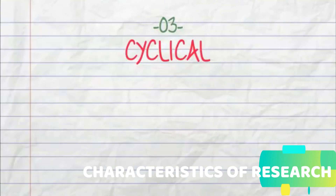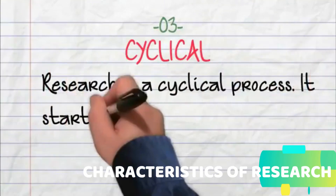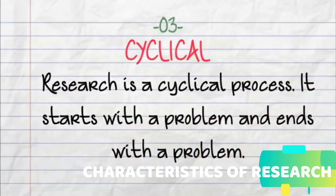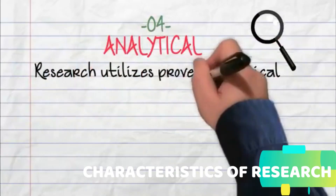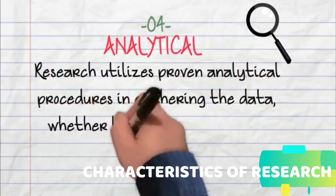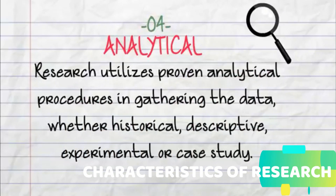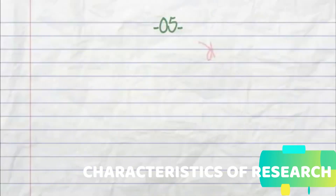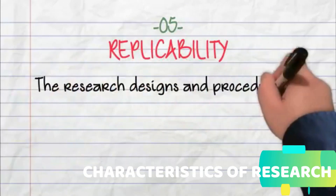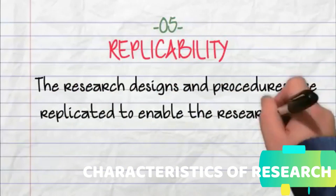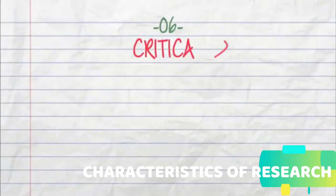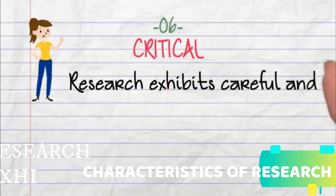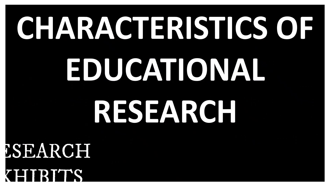The third characteristic is that it is cyclical. Educational research is a cyclical process because it always starts with a problem and ends with a problem. The fourth characteristic is that it is analytical — research utilizes proven analytical procedures in gathering data, whether historical, descriptive, experimental, or case study. The fifth indicates replicability: research designs and procedures are replicated to enable the researcher to arrive at valid and conclusive results. The sixth and final major characteristic is that it is critical — research exhibits useful aspects in a critical manner.